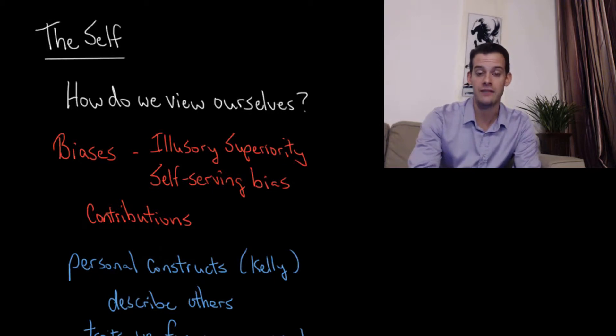Now I've also talked about the idea of self-serving bias. And this relates to our recollections of our own abilities. And we have a tendency to remember our successes and our achievements but to forget our failures and our mistakes.